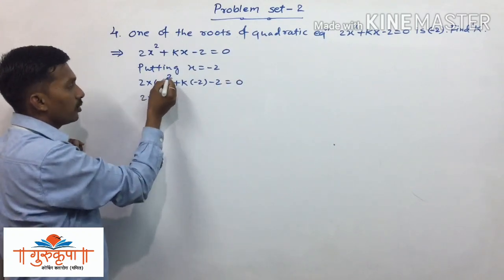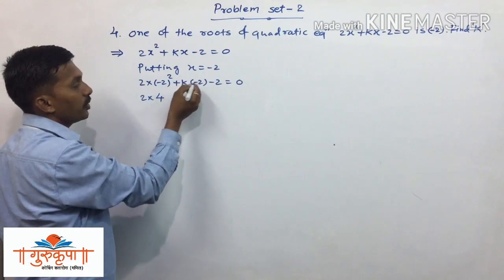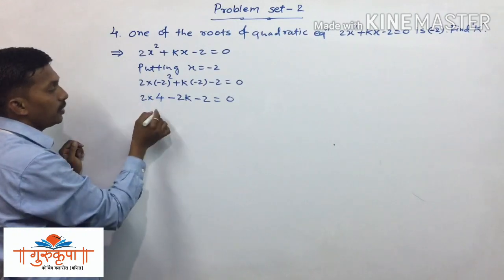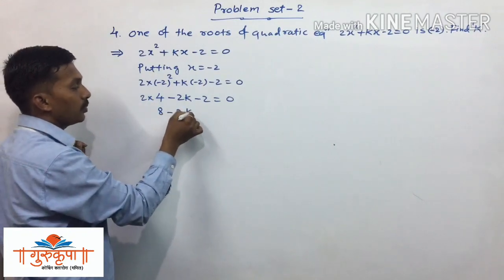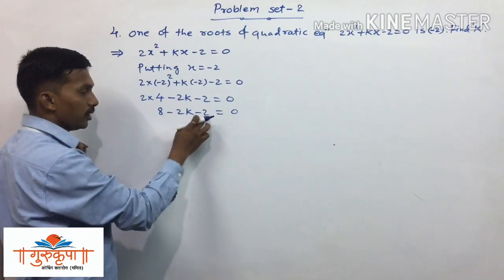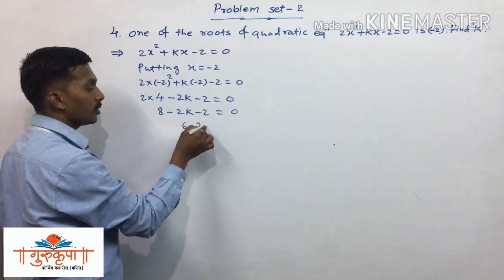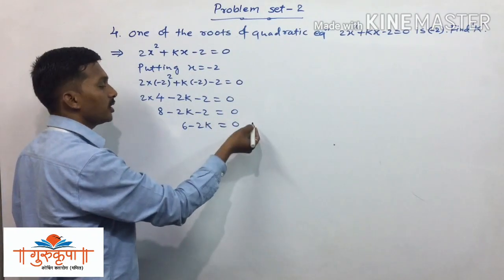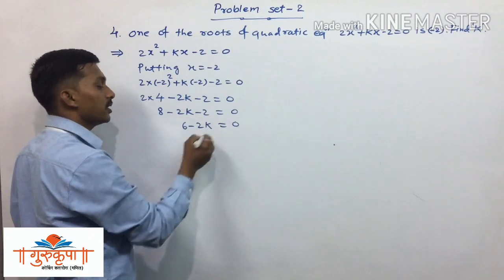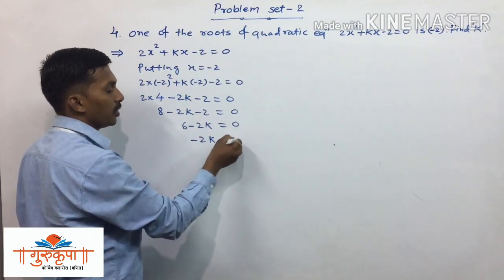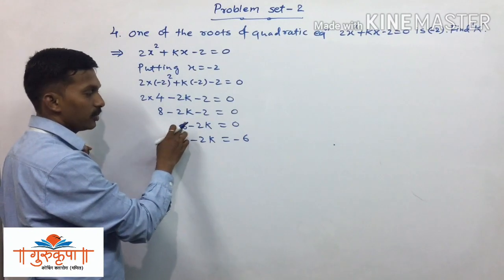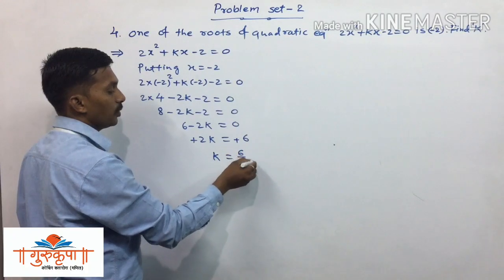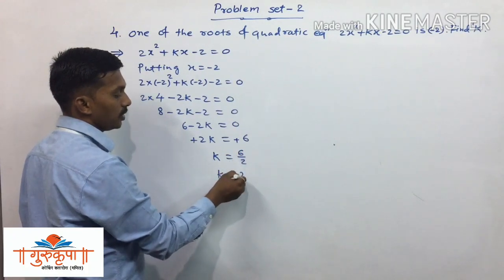The square of any negative number is always positive, so this gives us 2 multiplied by 4, plus k multiplied by minus 2, minus 2, equals 0. That is 8 minus 2k minus 2 equals 0, giving 6 minus 2k equals 0. Transferring terms, minus 2k equals minus 6, so k equals 6 divided by 2, which is k equals 3.